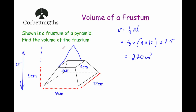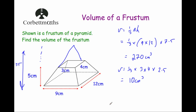Now the volume of the pyramid that was removed at the top: volume equals one third times the area of the base, where we've got three times four, and then times the height, where the height of the smaller pyramid was 2.5. One third times three times four times 2.5 equals 10 centimetres cubed. And then if we want the volume of the frustrum — what's left — we just take away the 10 from the 270. So 270 take away 10 equals 260 centimetres cubed.